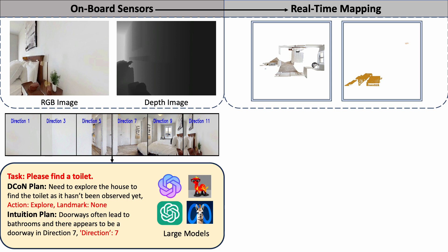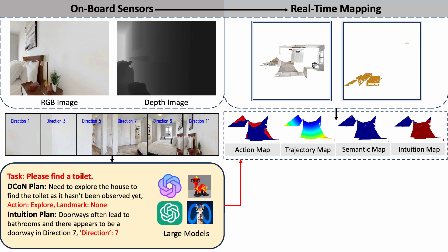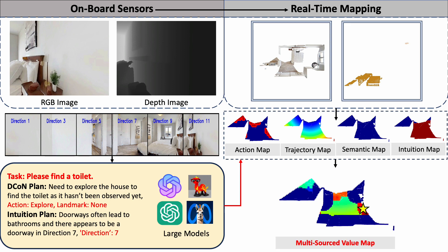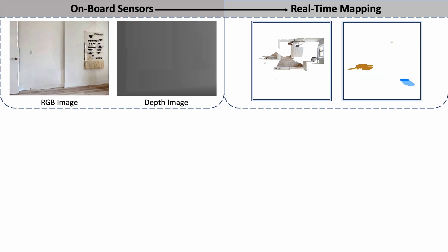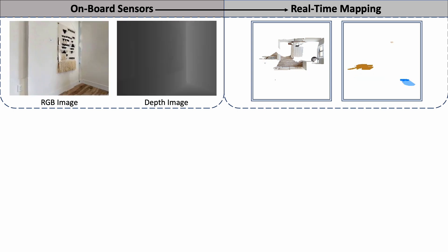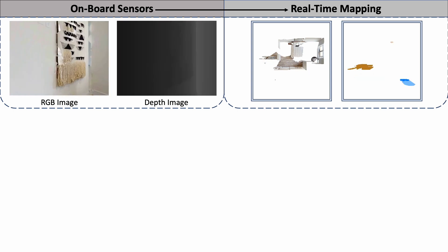Then, all the planning results will be translated into different types of value maps. Finally, the multi-sourced value map is generated and can be directly used for robot path planning. The robot will follow the generated path to arrive at a waypoint and start another round of planning.